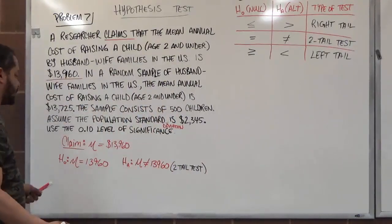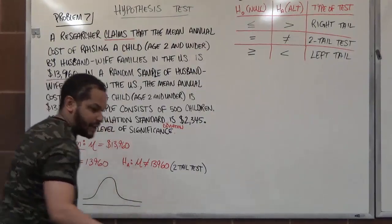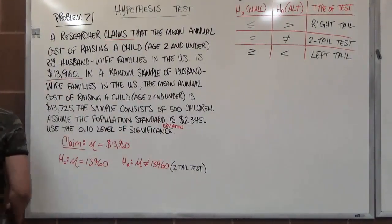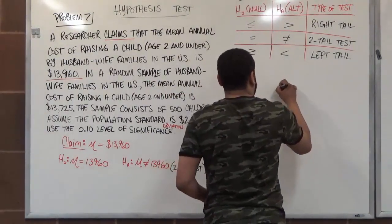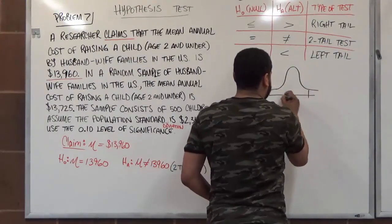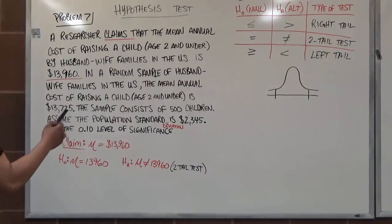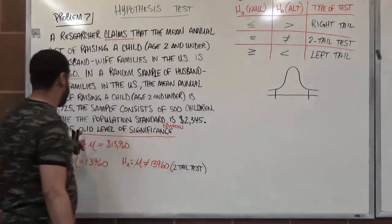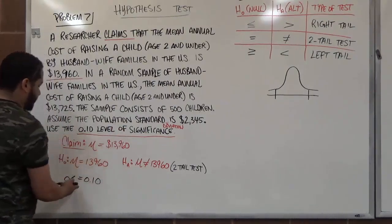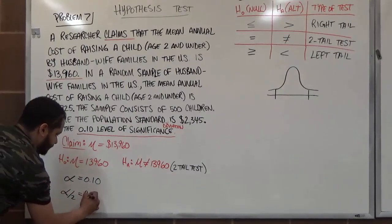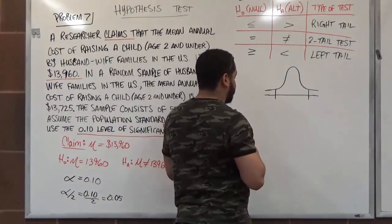Now that we know the type of test, let's draw our region so we can define the critical regions. For a two-tailed test, we draw the diagram with two tails. To define our critical region, we need the significance level, which is 0.10. So alpha = 0.10. To get the critical region, we take alpha divided by two: 0.10 / 2 = 0.05. So the area in each tail is 0.05, with 0.90 in the middle.